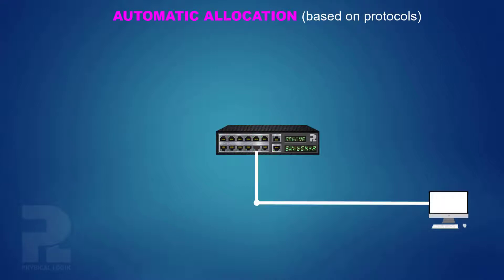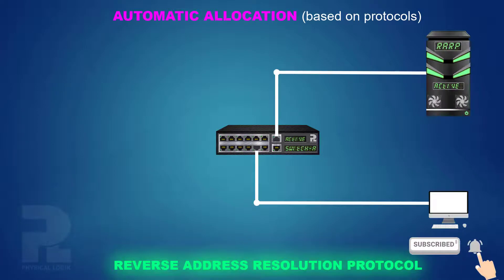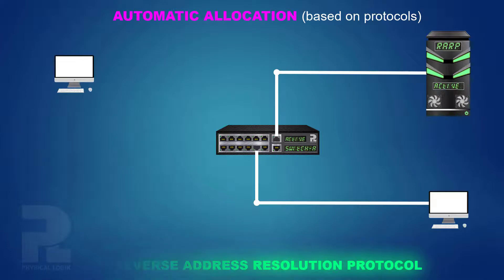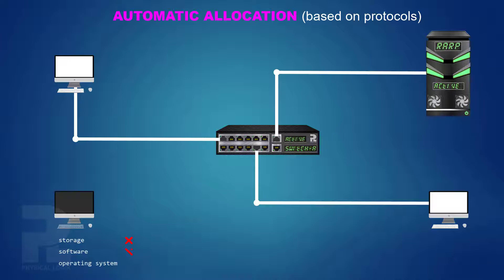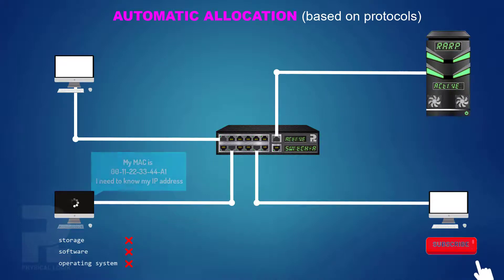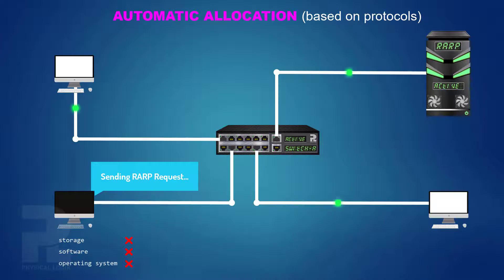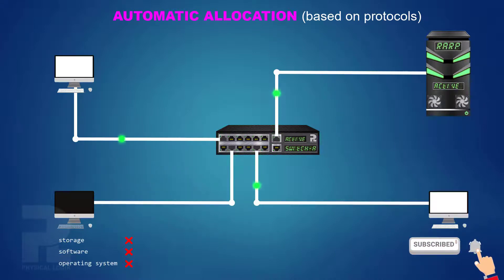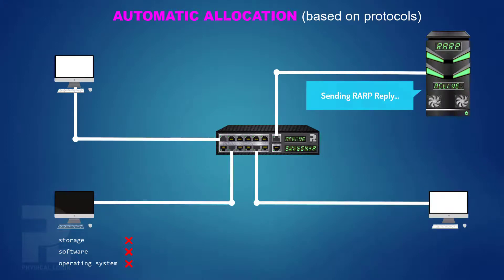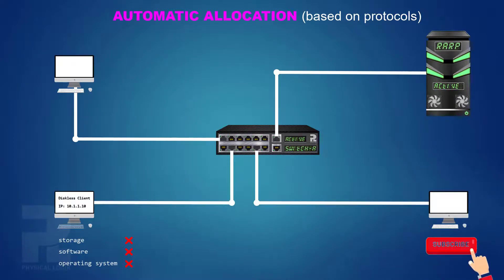The second method is automatic allocation. Automatic processes on a network are managed by protocols running over the network. An example is the Reverse Address Resolution Protocol, or RARP. When a new or diskless computer — a computer with no independent storage, software, or operating system — connects to a network and boots up, it broadcasts an RARP request packet containing its MAC address to obtain its IP address. This broadcast is received by an RARP server preconfigured with MAC-to-IP address mappings. The server searches this table and sends a response containing the client's IP address when a match is found, allowing the client to initialize its TCP/IP protocol stack.